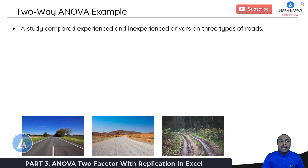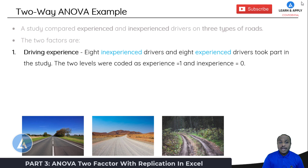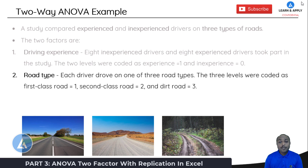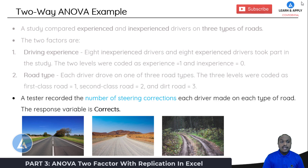In this example, a study compared experienced and inexperienced drivers on three different types of roads. The two factors are: first, driving experience — eight inexperienced and eight experienced drivers participated, coded as experience equals one and inexperience equals zero. The second factor is road type — each driver drove on each road type, coded as first class road equals one, second class road equals two, and dirt road equals three.